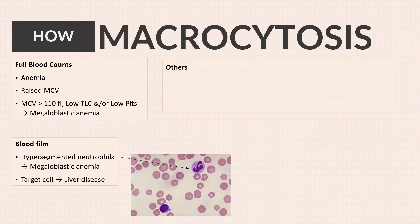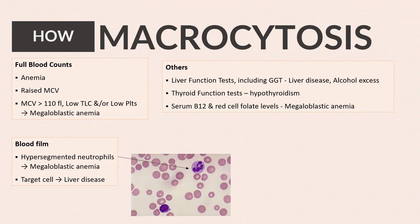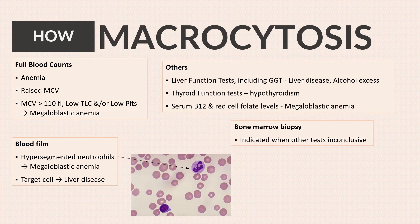Other tests needed to arrive at the cause of macrocytosis include liver function tests, including gamma-glutamyl transferase to look for liver disease and alcohol excess, thyroid function tests to exclude hypothyroidism, and serum B12 and red cell folate levels in megaloblastic anemia. Bone marrow biopsy is indicated only if the cause is not revealed by the above tests.